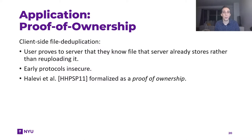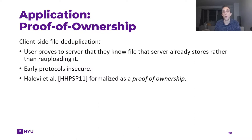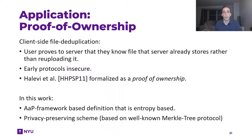Indeed, this application is something that cloud storage providers are actually interested in, and some of them have even deployed it in practice. Unfortunately, it turned out that many of those protocols are quite insecure in various subtle or less subtle ways. This prompted Halevi et al. in 2011 to actually formalize this task as what we nowadays call a proof of ownership. However, despite this sounding like a proof of knowledge, they could not just say it is a specific instance of proof of knowledge, but rather had to come up with an entirely new security definition, which in their case ended up being entropy-based — talking about all files having high min-entropy and defining security only for such files.